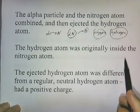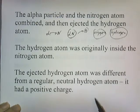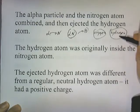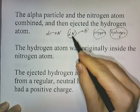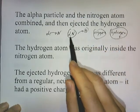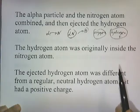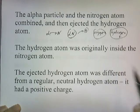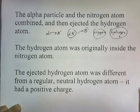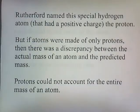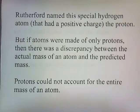The ejected hydrogen atom was different from a regular neutral hydrogen atom — it had a positive charge. So this hydrogen being spat out of the combined alpha and nitrogen entity was not a regular hydrogen atom; it had a positive charge. Rutherford named this special positively charged hydrogen atom the proton. Now there was a problem: if atoms were made of only protons, there was a discrepancy between the actual mass of an atom and the predicted mass.